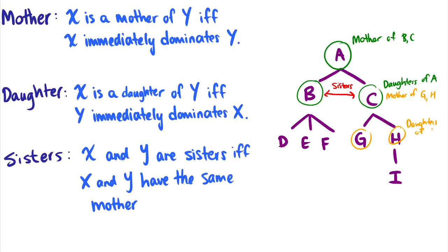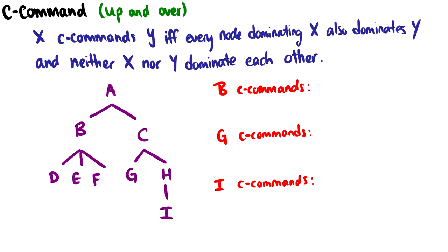We could talk about grandmothers and granddaughters, but typically we don't — there's no real need in our version of syntactic theory. We get around it by using a new term called C-command, which is very important syntactically. We won't see it for a while in this series, but it becomes very important for binding theory and scope — they are more advanced topics, but an important notion nonetheless.